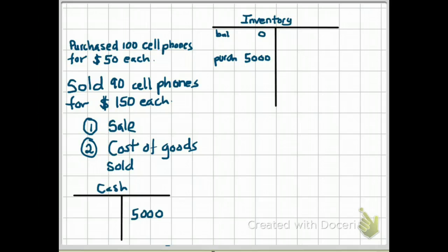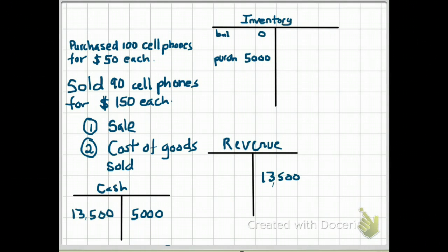Let's first look at the sale of the 90 cell phones. When we sell something, it is revenue. So our revenue account is the account that's going to be affected. We're going to debit cash, assuming it's a cash sale, we're going to debit cash for $13,500 and credit revenue for $13,500. How did we get at $13,500? We multiply the 90 units by $150, which is the selling price for our cell phone.